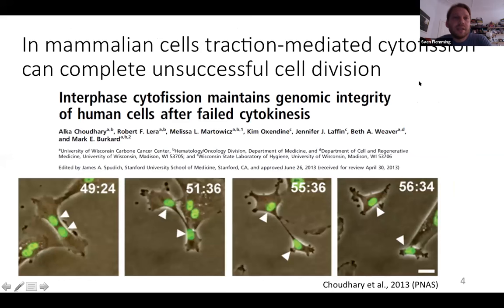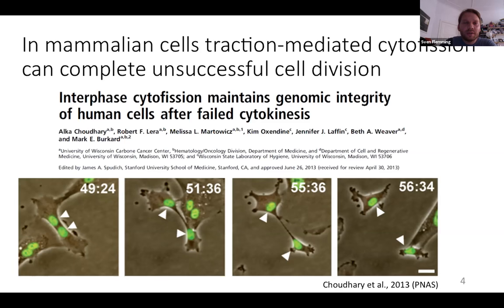Later, traction-mediated cytofission was also recognized in mammalian cells, and it seems to have an important role. It can happen that conventional cytokinesis fails, which can be very dangerous for genomic integrity. In this case, cells can use cytofission by traction forces to create two cells with just one nucleus.